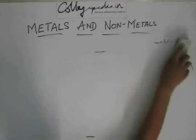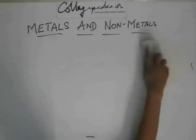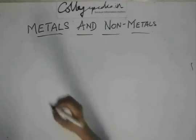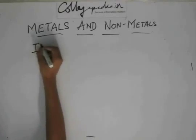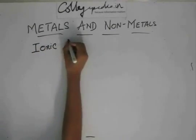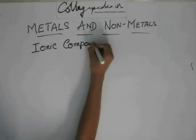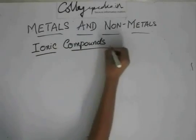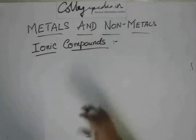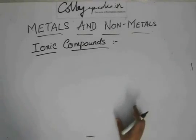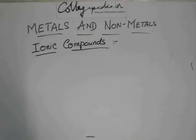These compounds, due to electron donation, are always in ionic form. They are also called ionic compounds because NaCl, MgCl₂ — these are always in the form Mg²⁺ and 2Cl⁻. They are not in MgCl₂ form. Since they are made up of ions, they are ionic compounds.